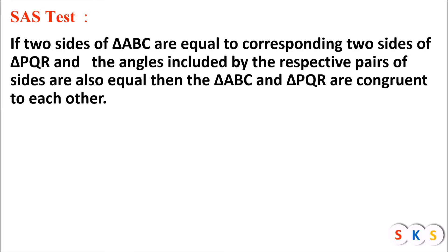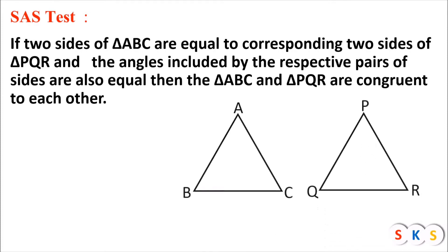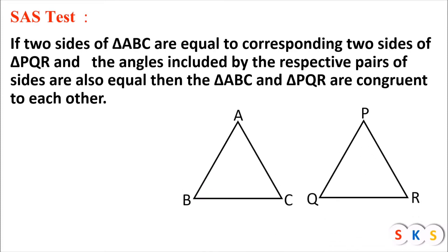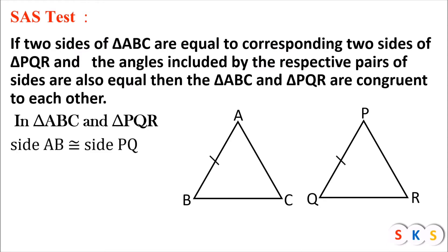Let us understand this with the help of an example. Here we have triangle ABC and triangle PQR. In triangle ABC and triangle PQR, look at this figure. Here side AB is congruent to side PQ, and angle ABC is congruent to angle PQR.